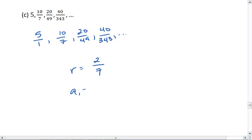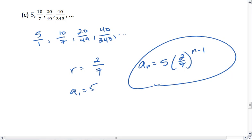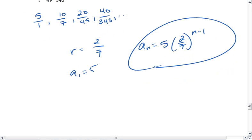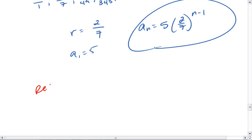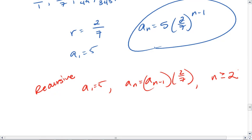This gives us an explicit formula of, nope, I reversed those. Your first term, 5, times the common ratio of 2/7 to the n minus 1. We also can get a recursive formula, recognizing our first term is 5, that each subsequent term is the first term multiplied by 2/7, and that this is for n greater than or equal to 2.